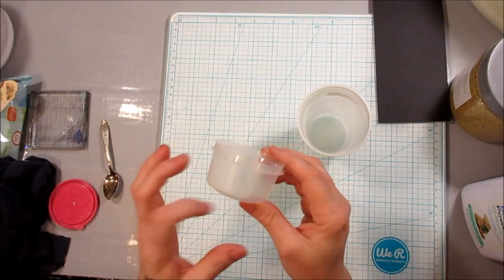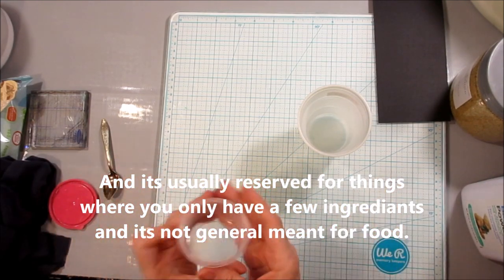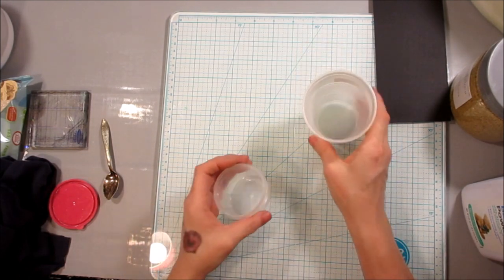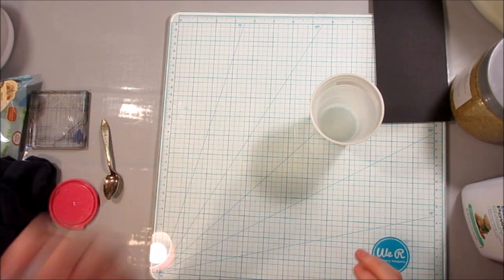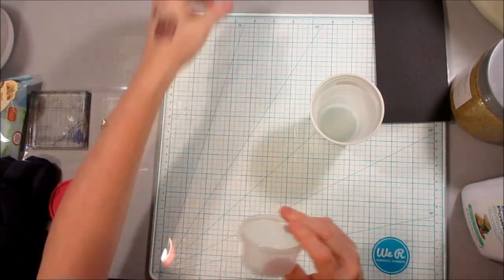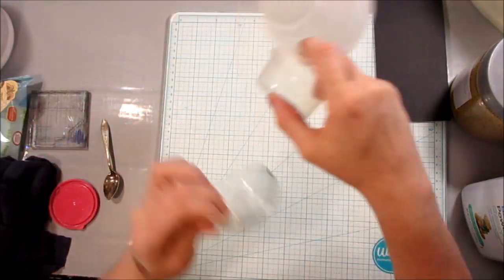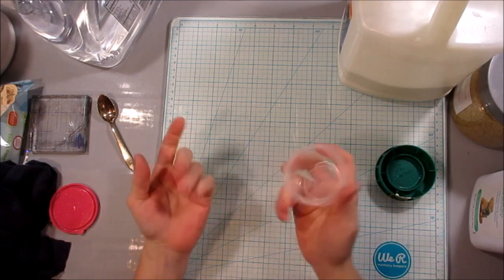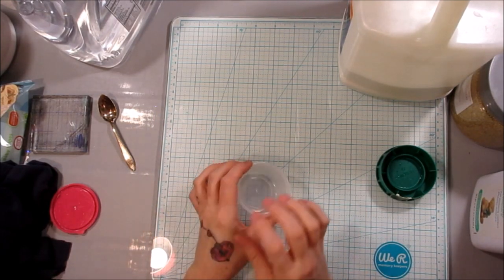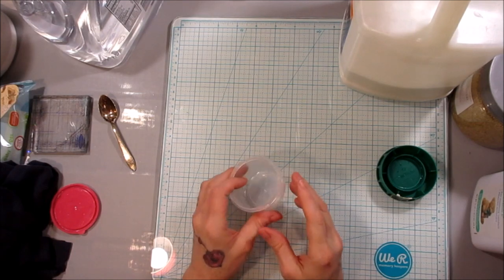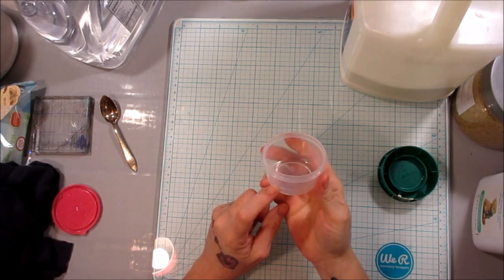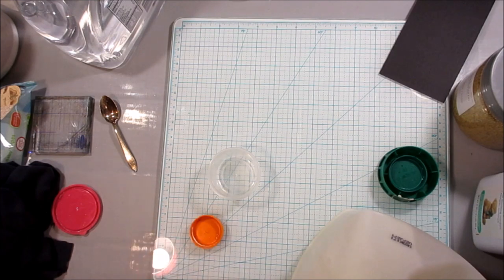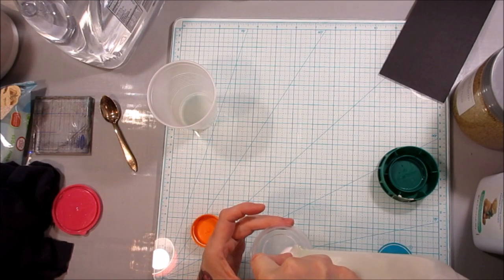So when I say one part, you don't have to have this container. It can be any container as long as you stick to that one container and that will give you the equal parts that you need. So it doesn't really matter what kind of container you use. So we're going to use half of this and just say a half part, because I don't want to use too much and I don't want to make too much.